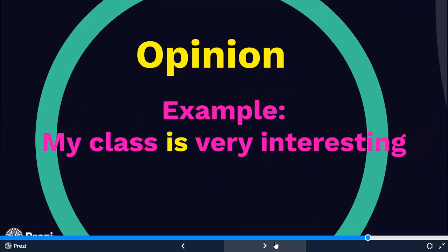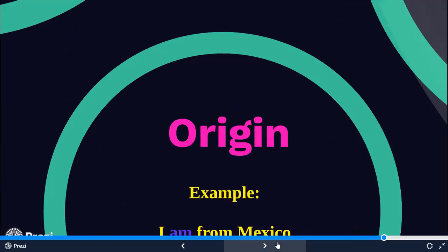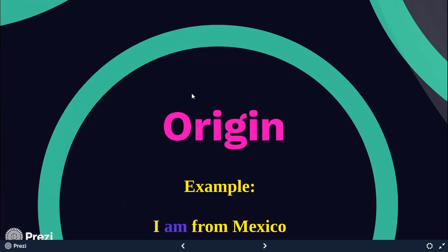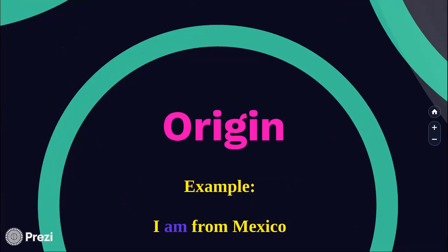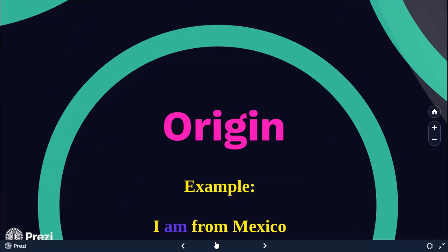Vamos a utilizar el verbo ser o estar para dar opiniones de cualquier tipo. Por ejemplo: 'My class is very interesting. She is very beautiful.' También para hablar del clima: 'El día está muy nublado.' Y también para hablar del origen: '¿De dónde eres? I am from Mexico.' O del origen de alguna cosa: 'My jacket is from China' — mi chamarra es de China. Podemos hablar del origen de personas y también del origen de cosas.